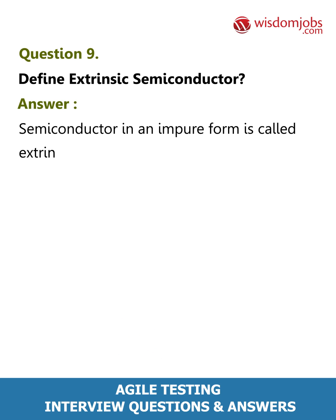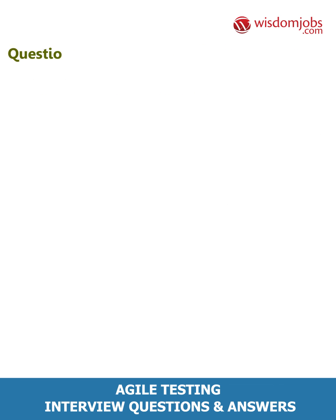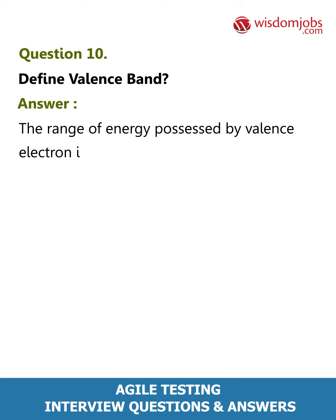Question 9: Define extrinsic semiconductor. Answer: A semiconductor in an impure form is called an extrinsic semiconductor. They are of two types: P-type and N-type. Question 10: Define valence band. Answer: The range of energy possessed by valence electrons in an atom is called the valence band.